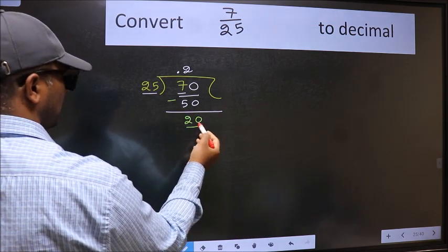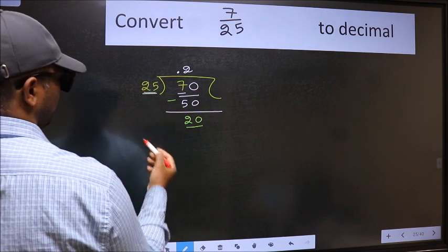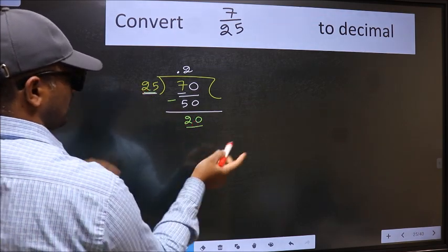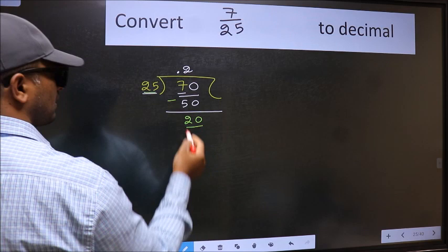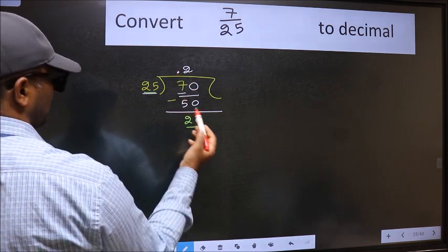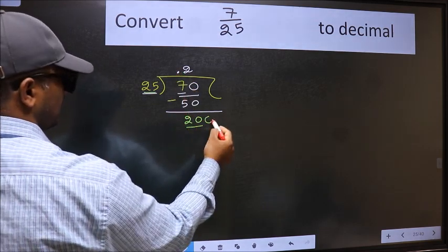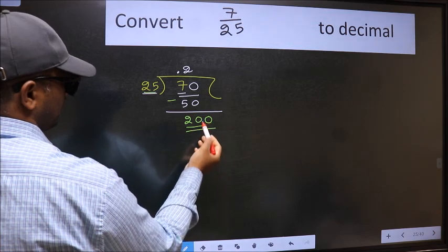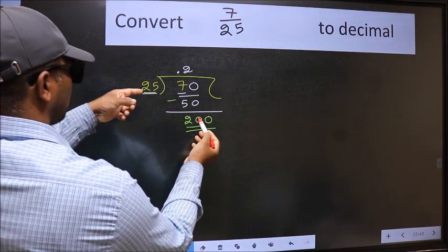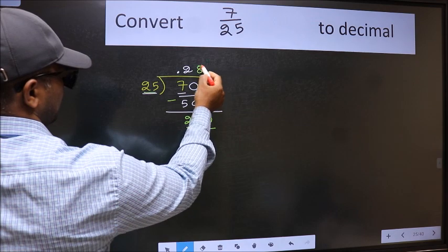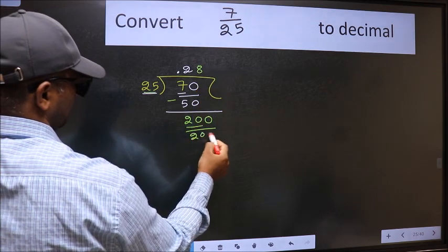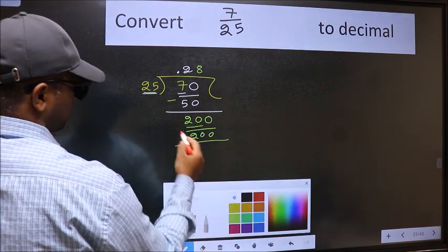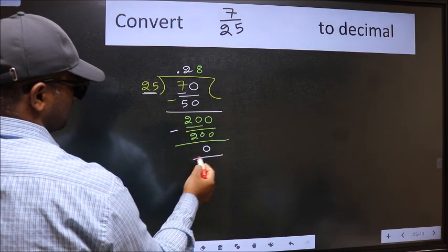Now here we have 20 and here 25. 20 is smaller than 25, and we already have the decimal, so this time we can directly take 0. So 200. When do we get 200 in the 25 table? 25 times 8 is 200. Now we should subtract. We got 0.